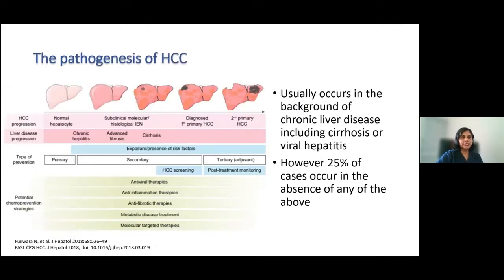Briefly touching upon the pathogenesis of hepatocellular carcinoma: in cirrhosis or chronic liver disease it is a field change which leads to the development of hepatocellular carcinoma. As you can see, chronic hepatitis, advanced fibrosis, cirrhosis — from then on the risk of hepatocellular carcinoma increases. This is important in terms of primary, secondary, or tertiary prevention, and the potential strategies to prevent HCC I will touch upon later.